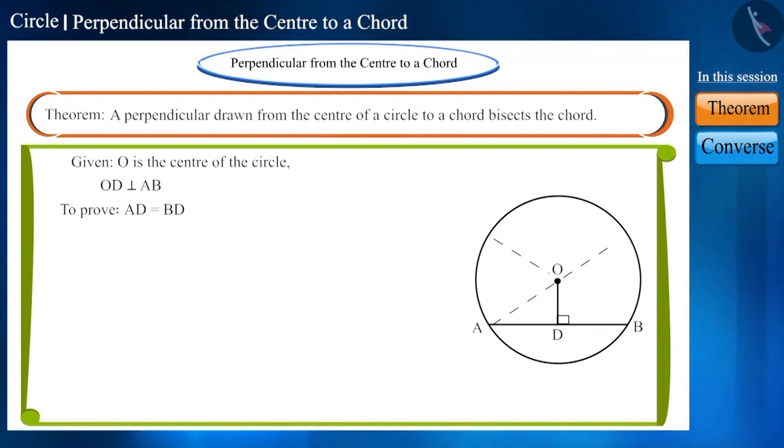If we join OA and OB in this way, we will get two triangles ODA and ODB. And if we prove these two triangles are congruent, then we will get these sides as equal.